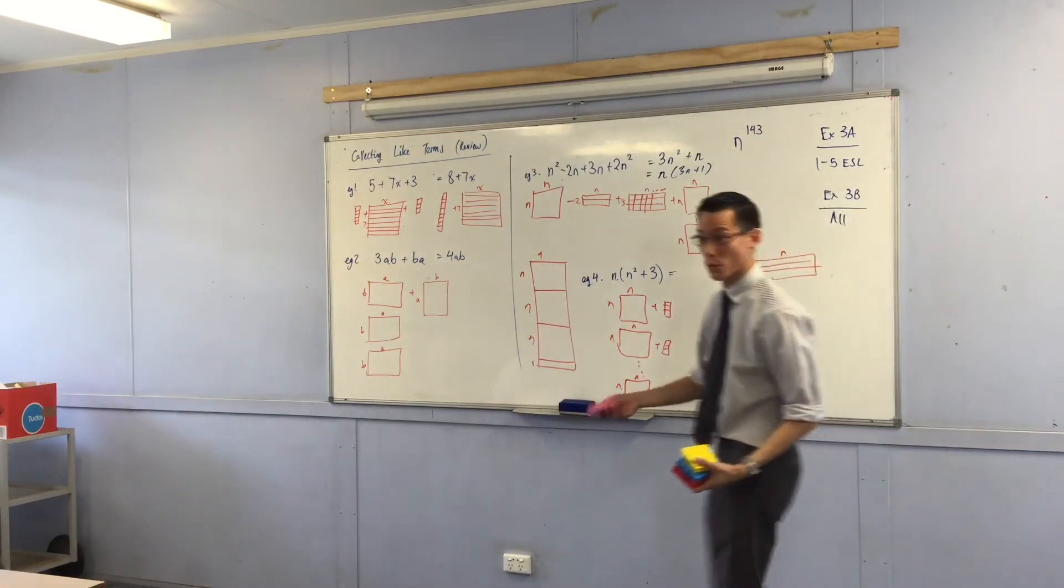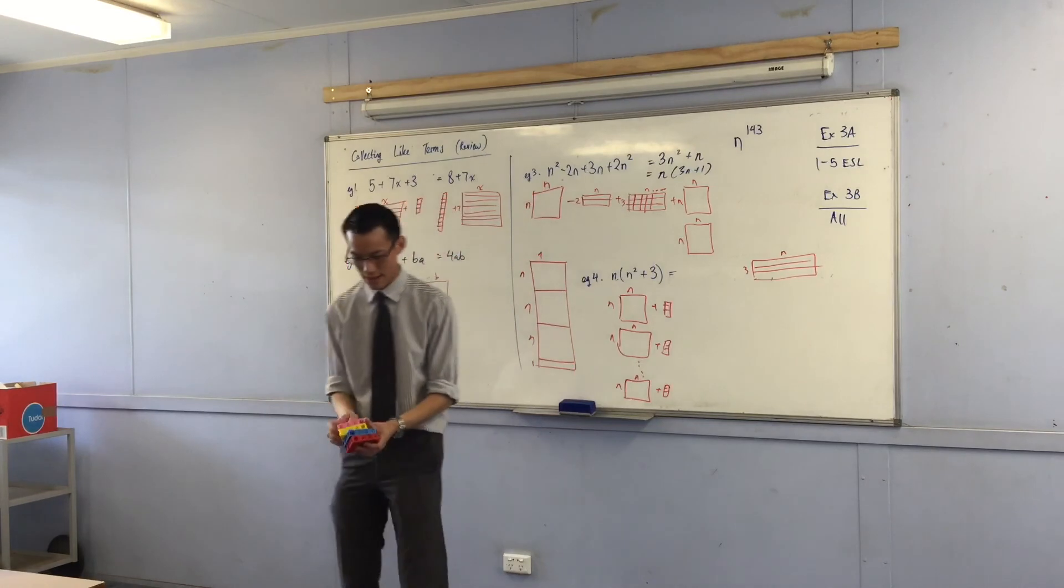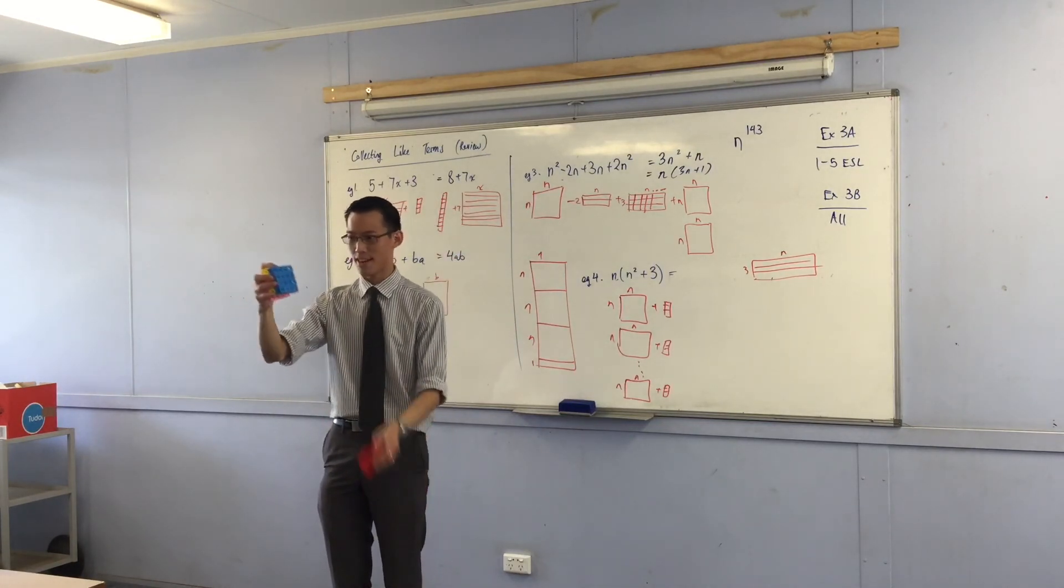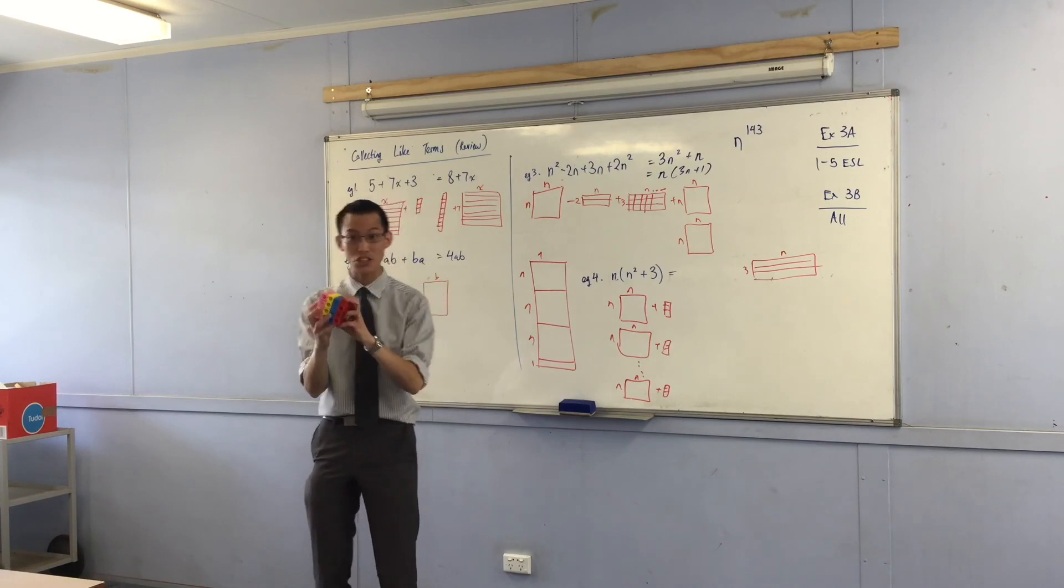When you take, let's say n was 4, if you take one and then you put it together with two and then you put it together with three and then you've got four, which is n of them, what's that?